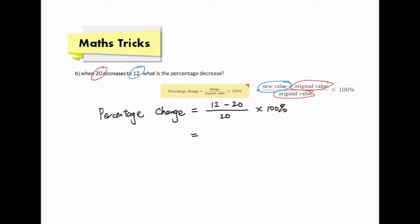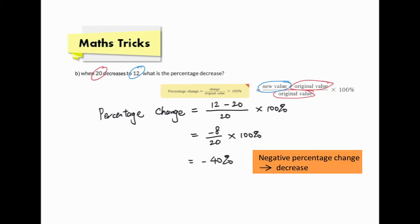The percentage change equals (12 minus 20) over 20, times 100%. We have negative 8 over 20 times 100%, giving negative 40%. According to the question, we need to find the percentage decrease. We do not need the negative sign for percentage decrease, so the percentage decrease is 40%.